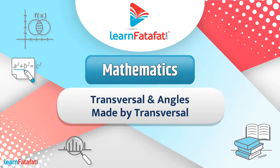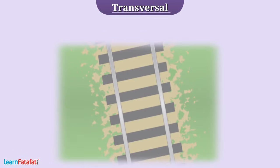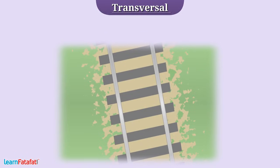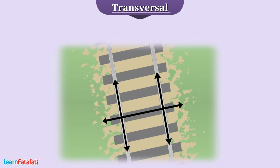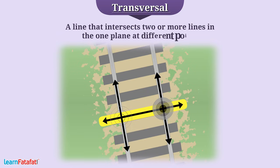Today, we will learn about transversal and angles made by transversal. You might have seen a railway line in which one line intersects two lines. A line that intersects two or more lines in one plane at different points is called a transversal.